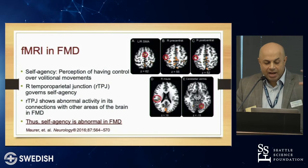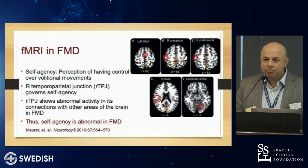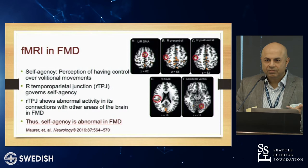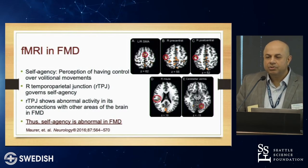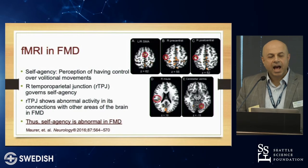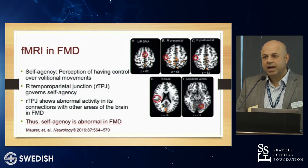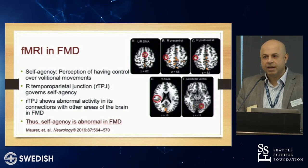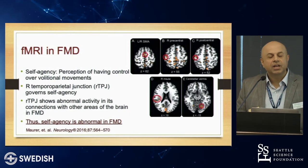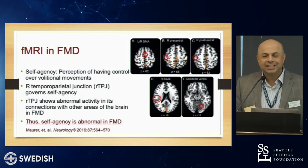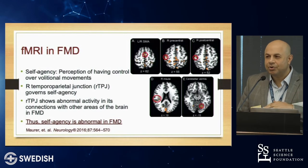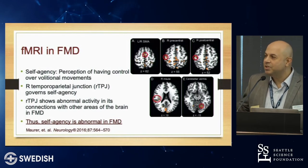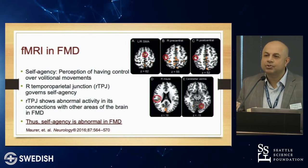More functional MRI studies show that the right amygdala and the right temporoparietal junction have abnormal connectivity. Self-agency — the ability to have insight that I can control my movements — is impaired. People with functional movement disorders lose that perception of self-control; they think that the movements are externally derived and that they have no control over them.